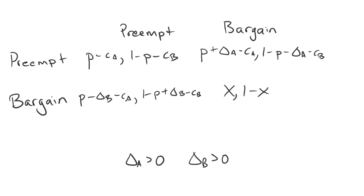If you think about what that means, though, this question boils down to whether this outcome is a Nash equilibrium. If bargain-bargain is a Nash equilibrium, then we can sustain peace.